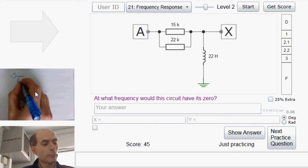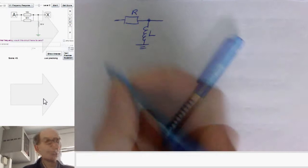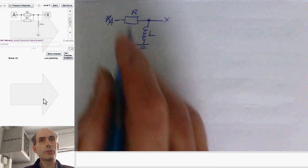And once again, this is a potential divider. So if that's the input A, and this is the output X, the standard potential divider equation applies.